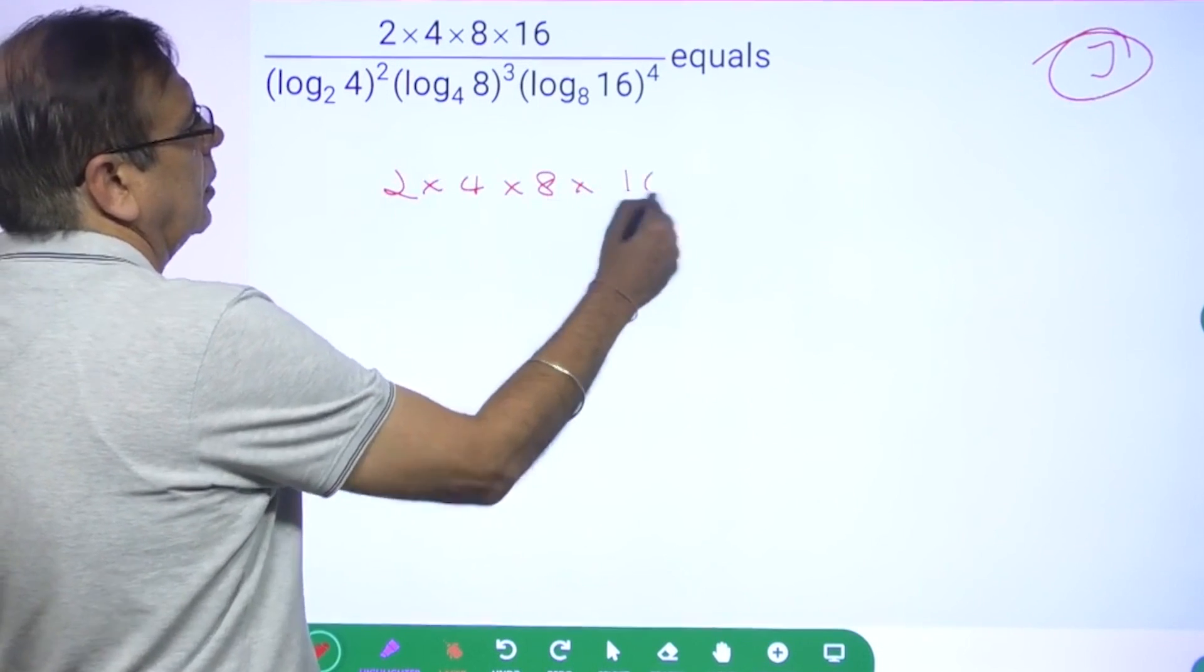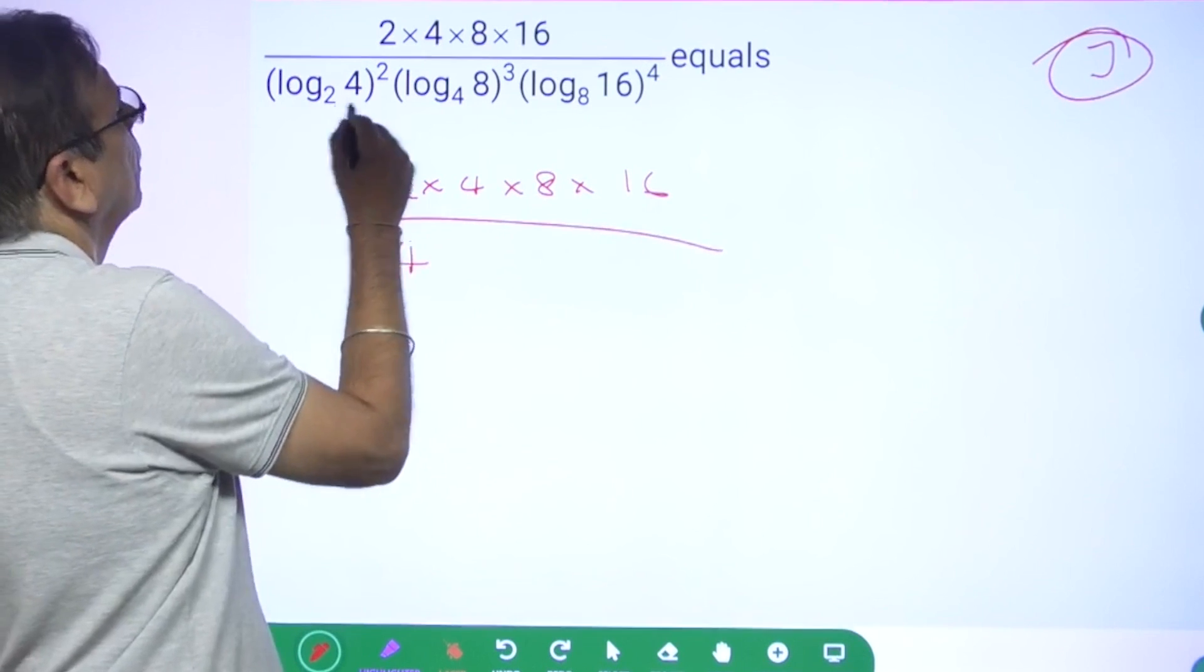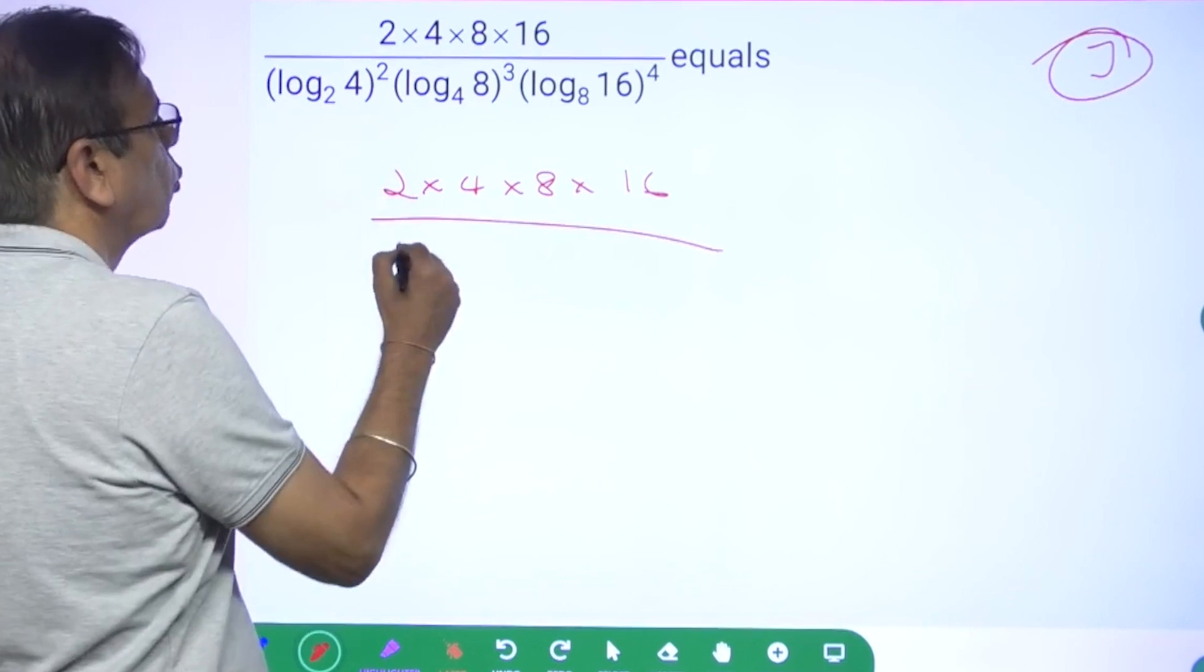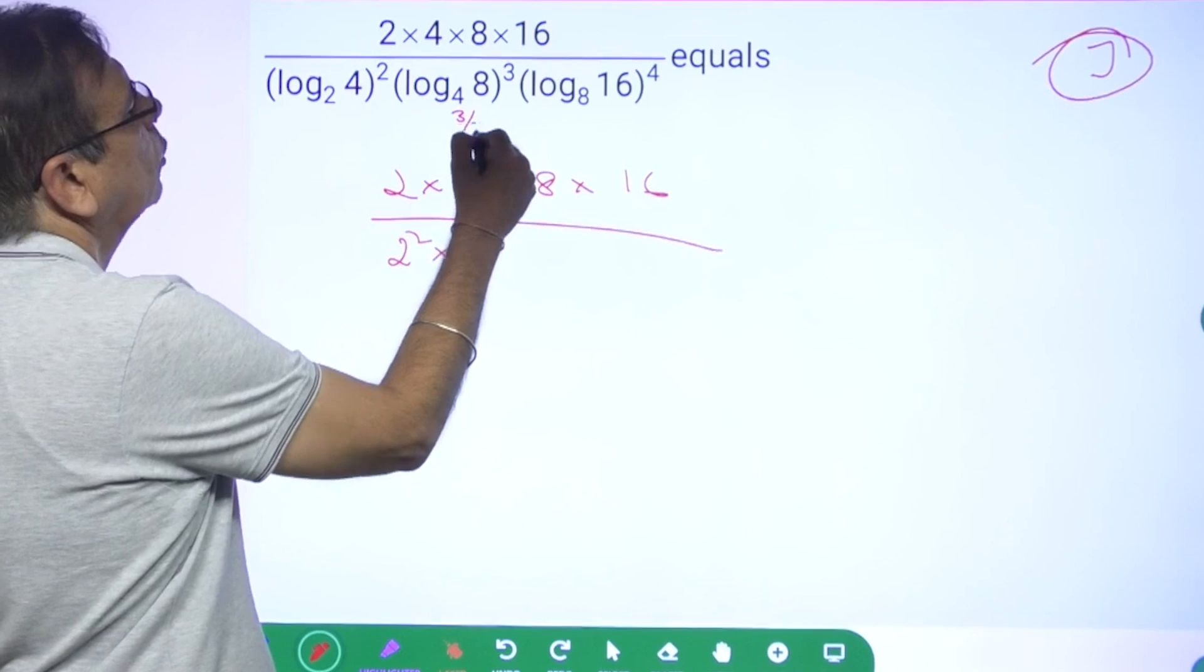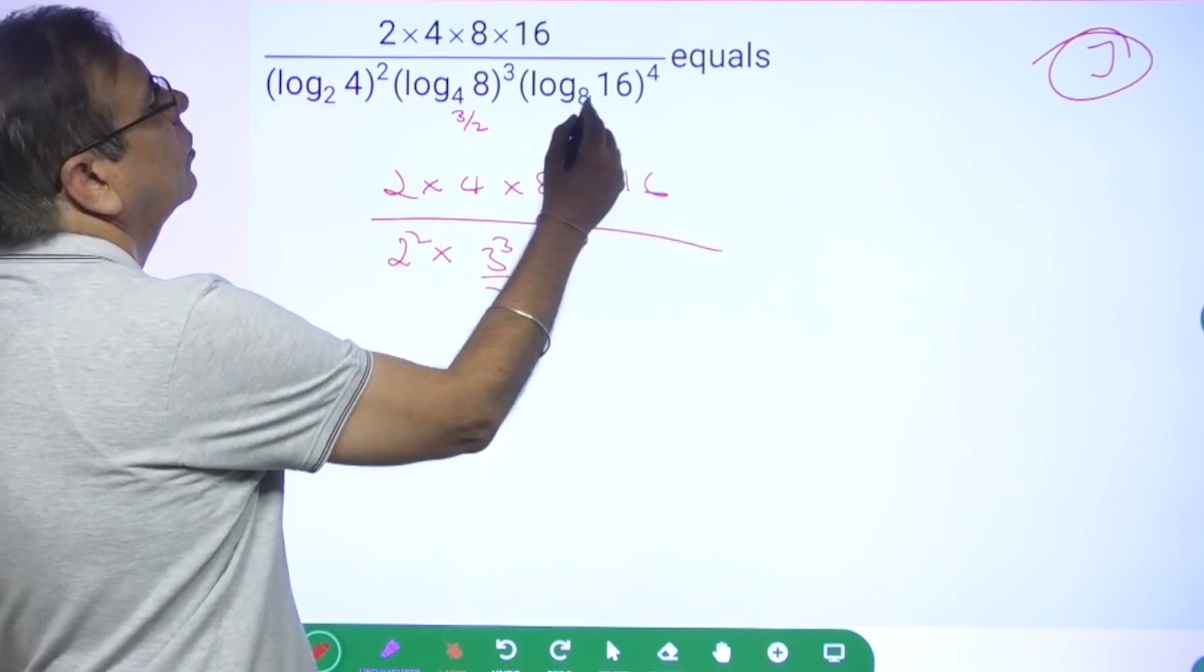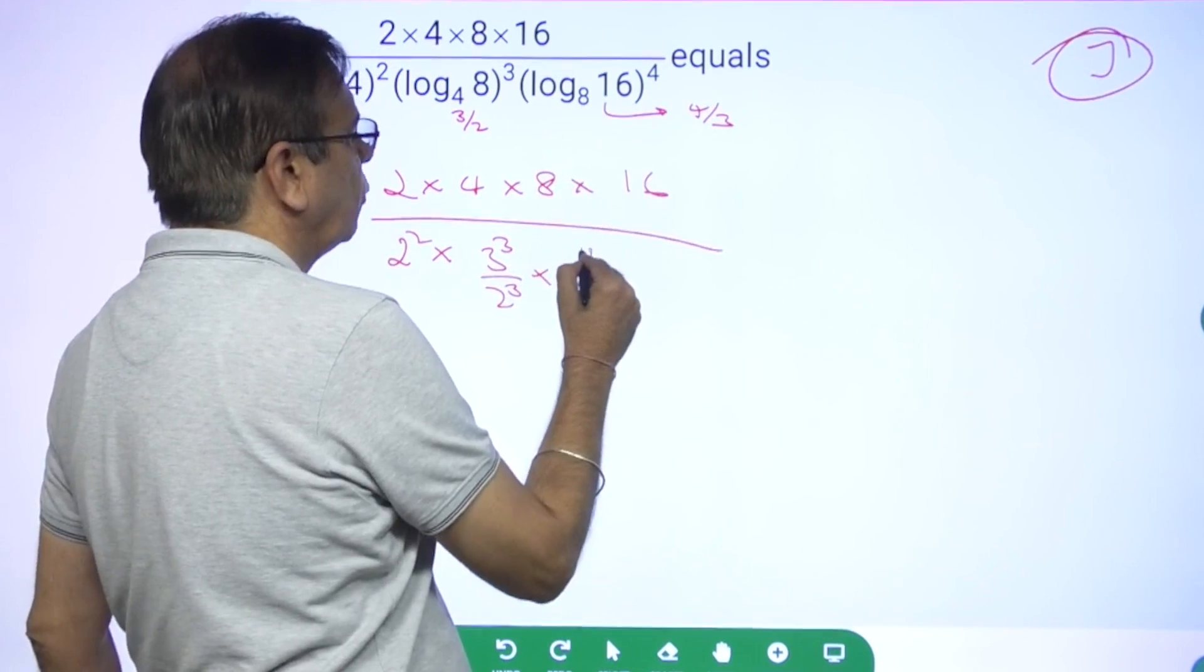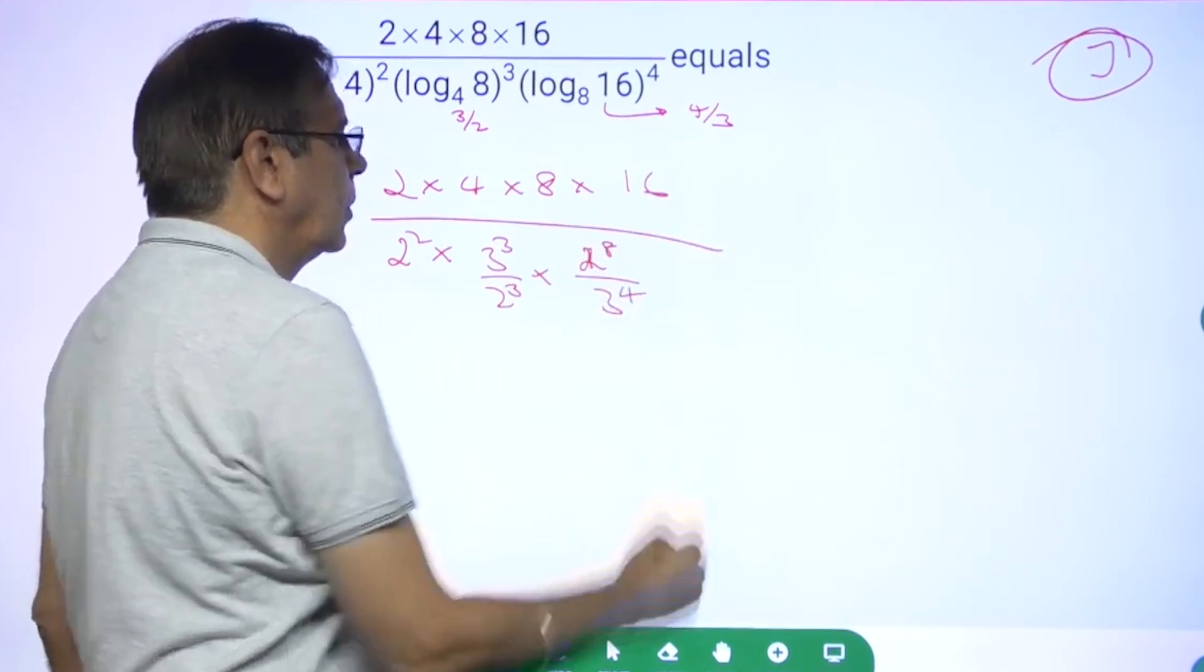This is 2, 2 square, 4. Okay, so let me write everything in terms of 2 square only. This is 2, 2 square, okay, into this is 3 by 2 or 3 cube by 2 cube, and this is 4, so 4 to power 4 or 2 to power 8 by 3 to power 4, right?